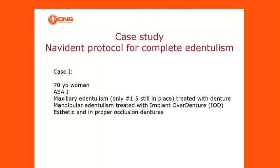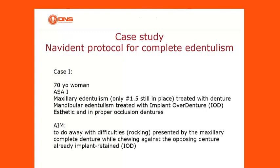The case shows a 70-year-old woman with maxillary edentulism — only tooth number 15 still in place — treated with a denture, and mandibular edentulism treated with an implant overdenture, with aesthetic and proper occlusion dentures. The aim is to address the difficulties presented by the maxillary complete denture while chewing against the opposing implant-retained denture.